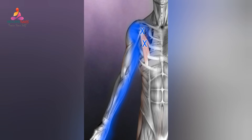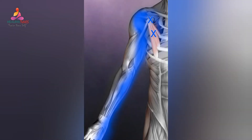A hallmark of these trigger points is pain in the ring and middle finger. A tight pectoralis minor muscle with active trigger points is likely to compress the nerves and blood vessels as they exit the armpit region to supply the arm. This can simulate or cause thoracic outlet syndrome and carpal tunnel syndrome, with symptoms such as pain and numbness that travel down the arm into the wrist, hand, and fingers.